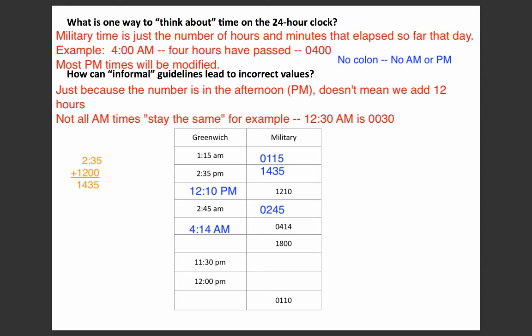What about 1800? We can tell this is going to be in the afternoon, so we subtract 12 from the number of hours: 18 minus 12 equals 6. So this is 6:00 p.m. Next, 11:30 p.m. — we're only 30 minutes away from the new day. Adding 12 to the hours gives us 2330. And 12 p.m. is noon — that stays the same, 12 hours into the day, so it's written as 1200.